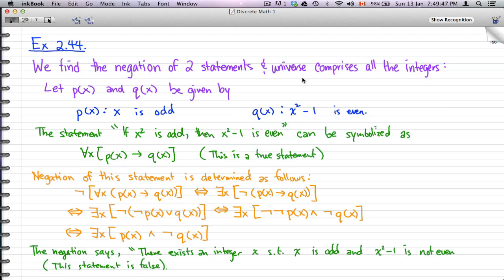We will find the negation of two statements in the universe comprising all the integers. Let's begin with the negation of our first statement. Let p(x) and q(x) be defined by p(x): x² is odd, and q(x): x² - 1 is even. The statement 'if x² is odd then x² - 1 is even' can be symbolized as for all x [p(x) implies q(x)], and that is in fact a true statement.